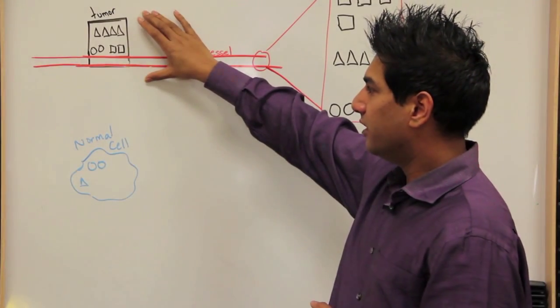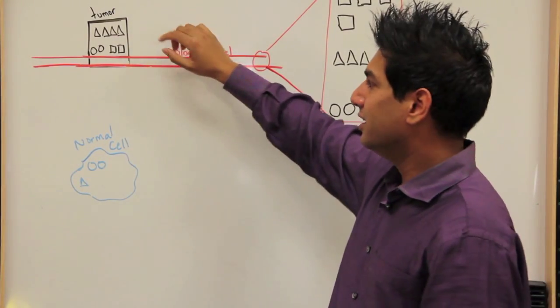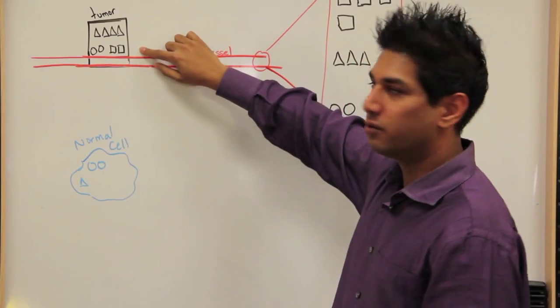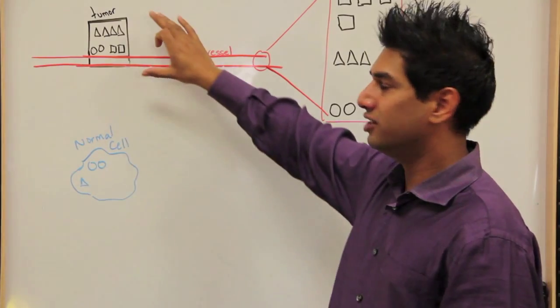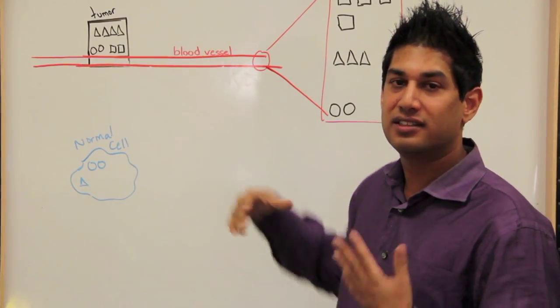So the second step, once you've identified them, you can say these triangle proteins and these square proteins help us know the difference between a tumor cell and a normal cell. Can we actually detect them in the blood? That's the second question. We want to have a test in the blood.